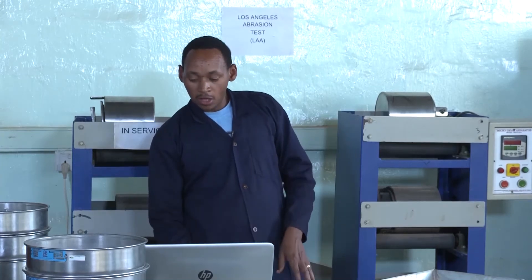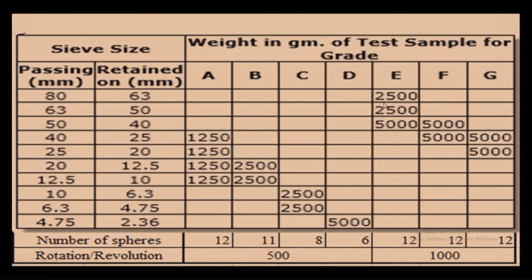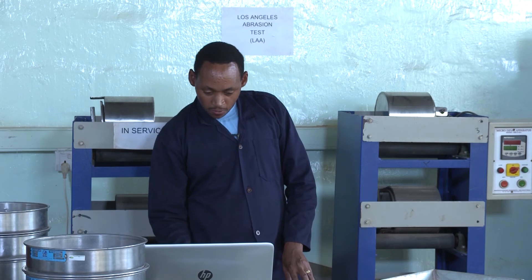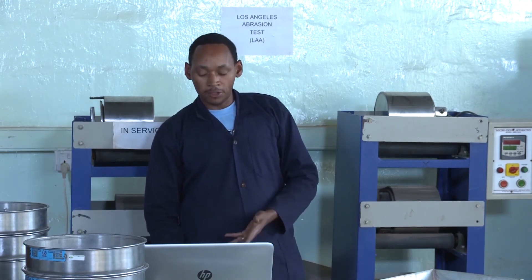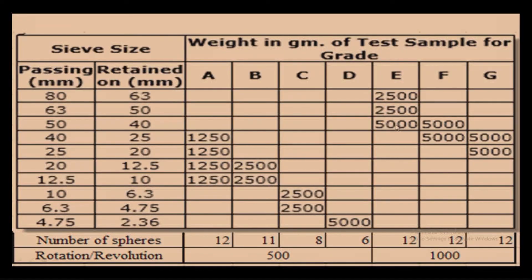Classes E, F and G are somewhat different from classes A, B, C and D. For class E, we use sieves of 80, 63, 50 and 40. We take 2.5 kg from the 80 sieve retained on 63, and also a sample passing through 63 retained on sieve 50, taking 2.5 kg there. Then we take 5 kg from sieve 50 retained on 40.